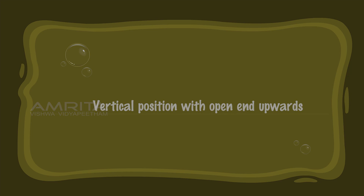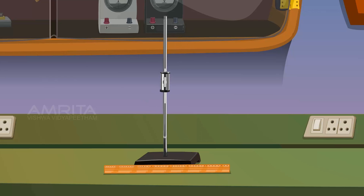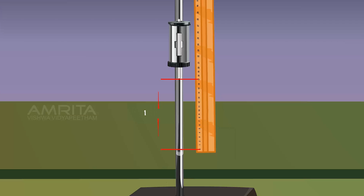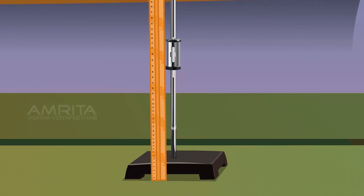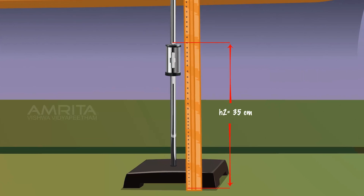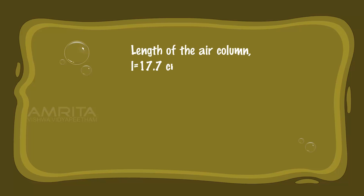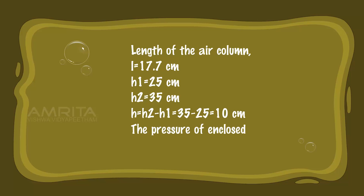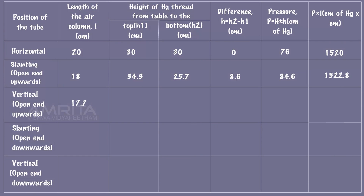Vertical Position with Open End Upwards: Place the quill tube vertically with its open end pointing upward and take the measurements. L = 17.7cm, h1 = 25cm, h2 = 35cm. Then h = h2 - h1 = 35 - 25 = 10cm. The pressure of enclosed air: P = 76 + 10 = 86cm of mercury. Record the observations in the tabular column and find the value of P × L.